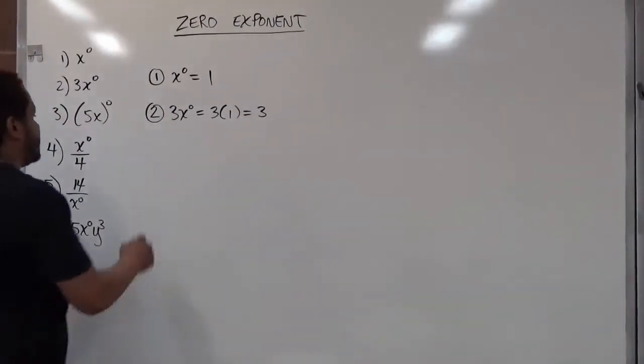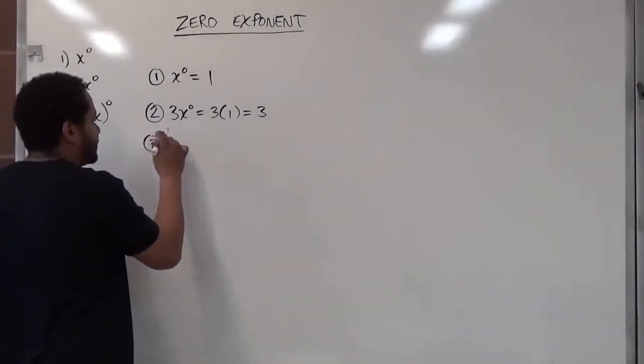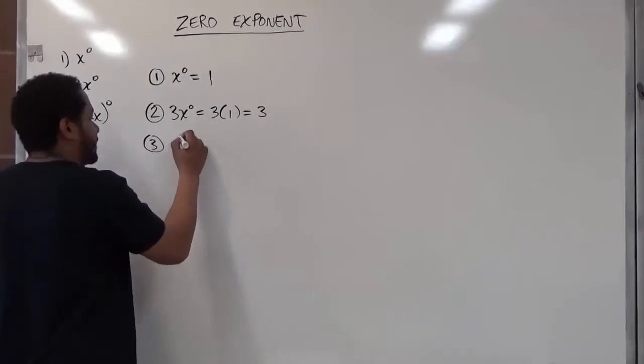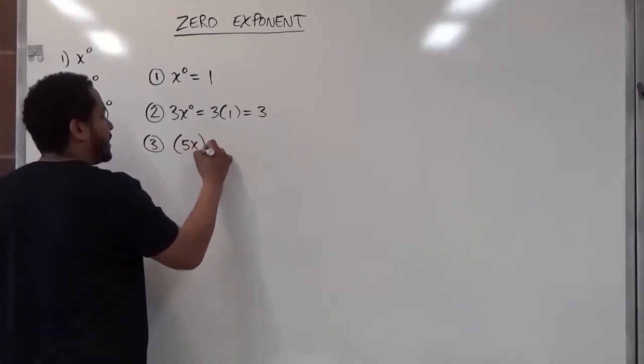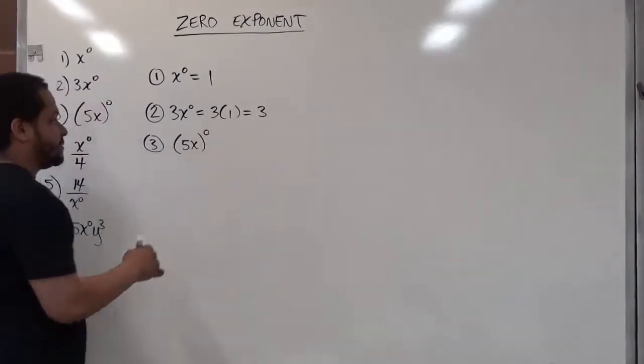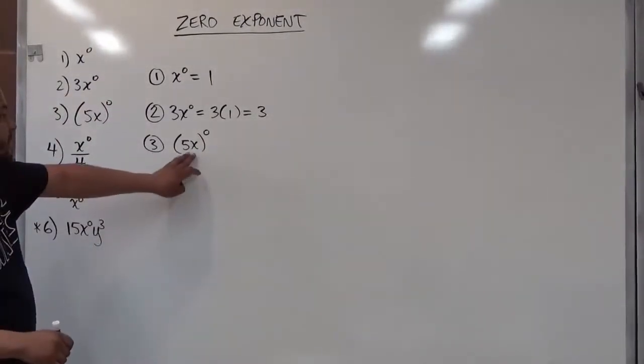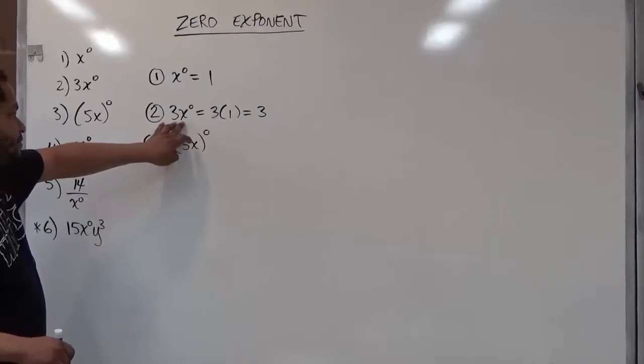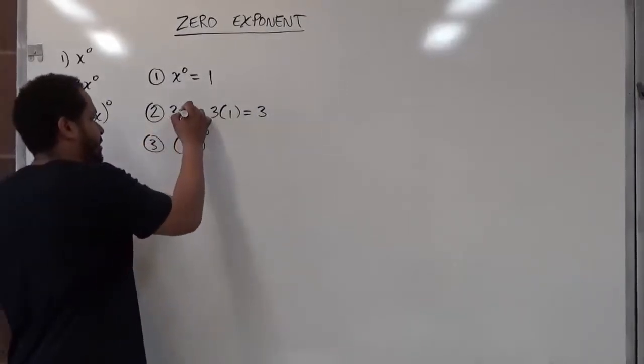Now in another case we'll see when it turns everything into one. The only time that occurs is when we have a term inside the parentheses where the exponent is being applied to everything inside the parentheses. This is considered one term now, not separate terms like problem two where we are multiplying three times x to the power of zero.